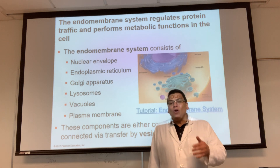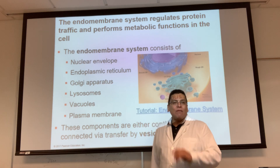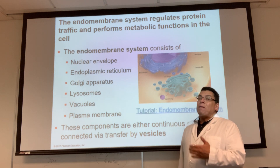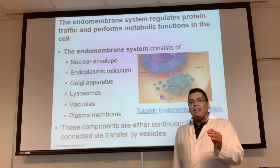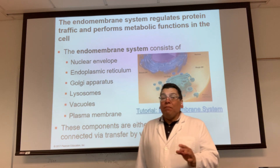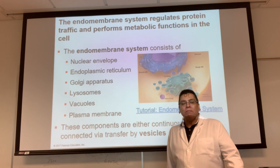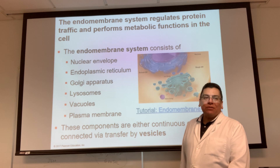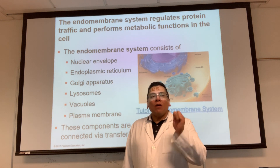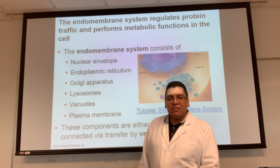Sometimes the endomembrane system will send the protein out of the cell — that would be called a secreted protein, like insulin, which is a secreted hormone protein. Sometimes the protein will find itself inside the cell membrane — that's called a membrane protein. And sometimes it gets thrown into a vesicle like a lysosome, containing hydrolytic enzymes. The endomembrane system makes three different kinds of proteins.